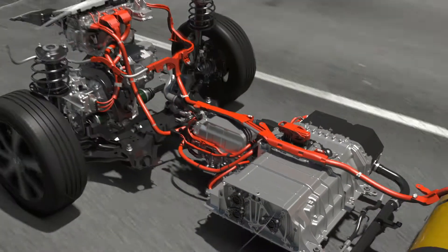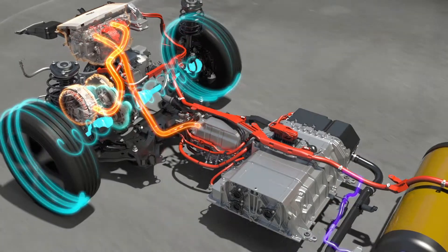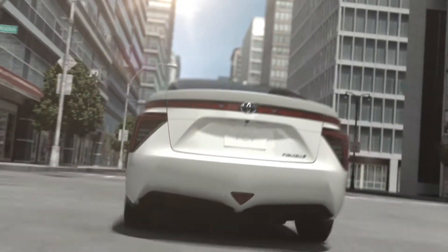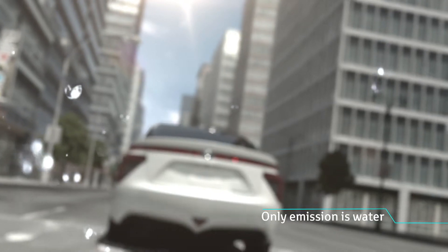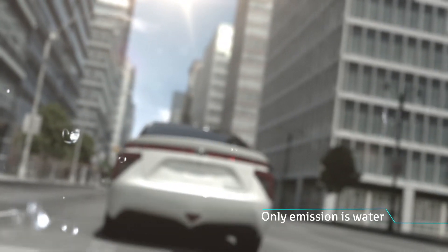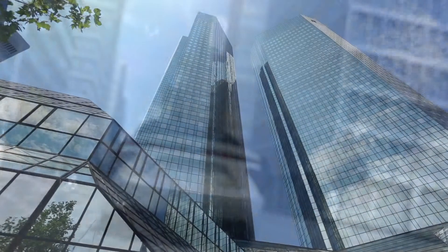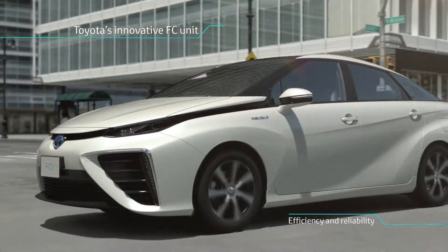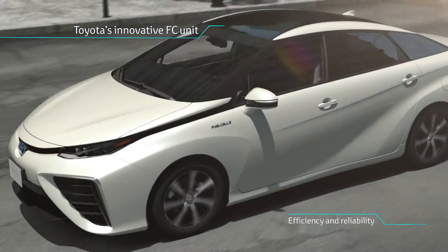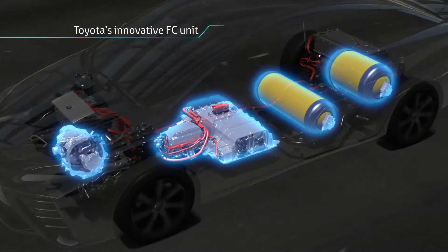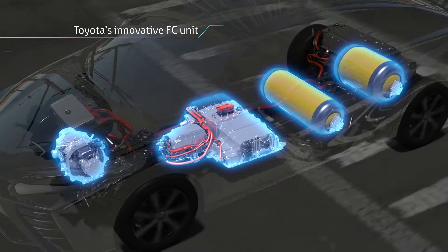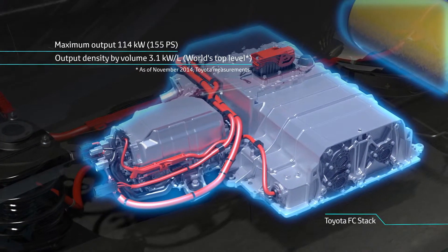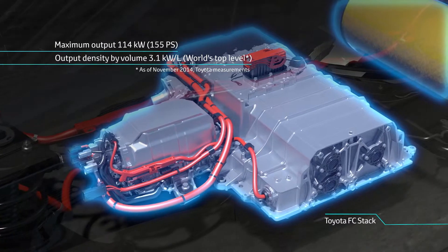Hydrogen and oxygen come together in the fuel cell stack to supply the electricity to the electric motor via the power control unit. The fuel cell unit in the FCV generates over 100 kilowatts of its own electricity, operating at 3.1 kilowatts per liter of output power density.